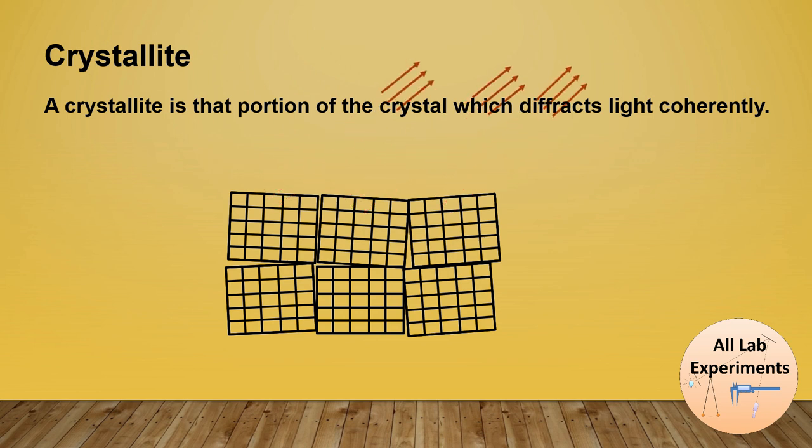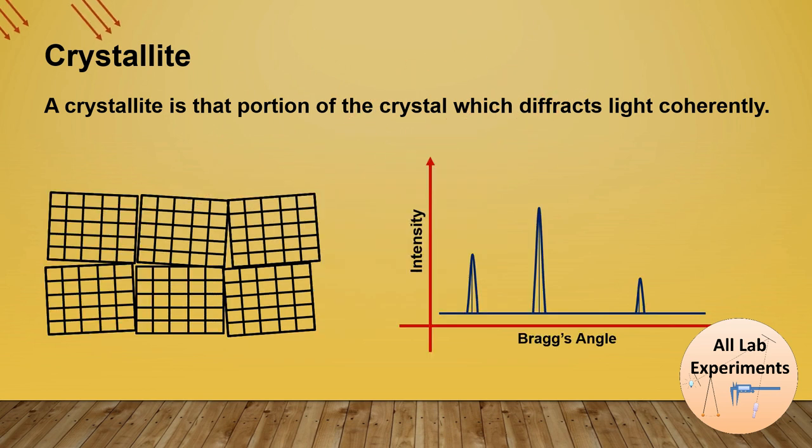Now when X-rays fall on these samples, they will diffract light at slightly different angles. So in this case if we make plot of its XRD pattern, we will find that the X-rays are diffracting at slightly different angles, so we will observe a broad peak instead of a single line.